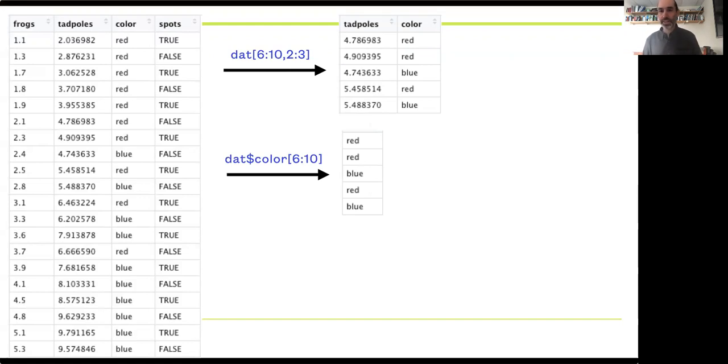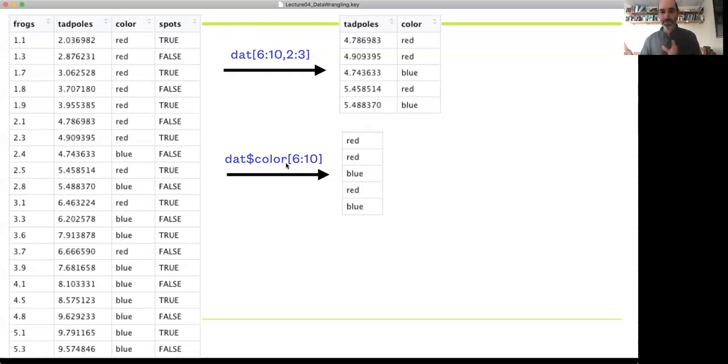I can also do this by name. So I can say, I want to look at just data color, data dollar sign color, and then look at say, rows six through ten.